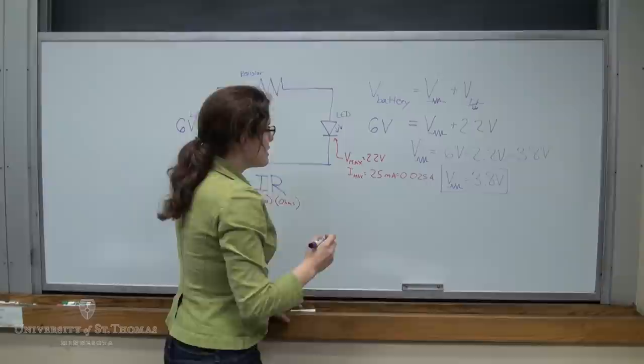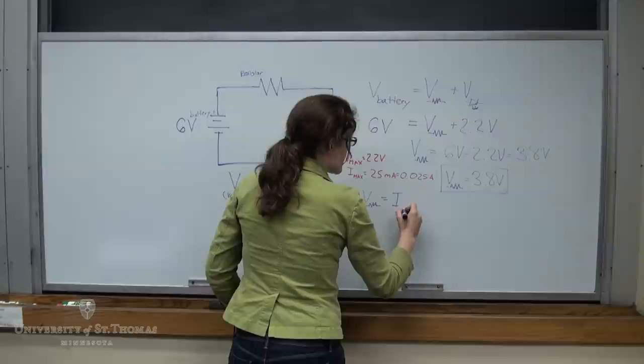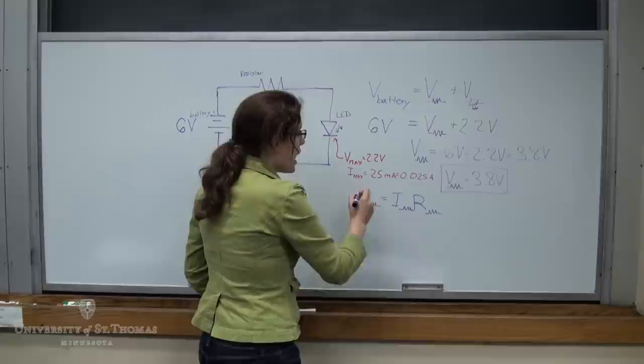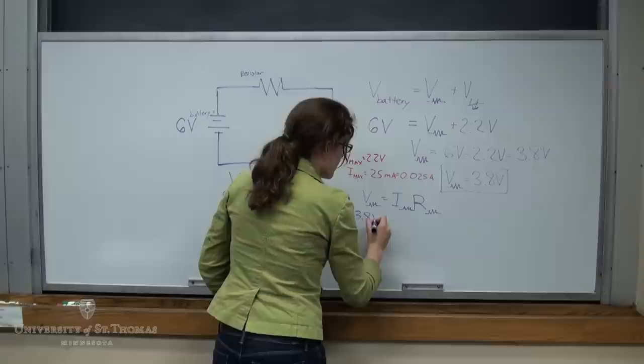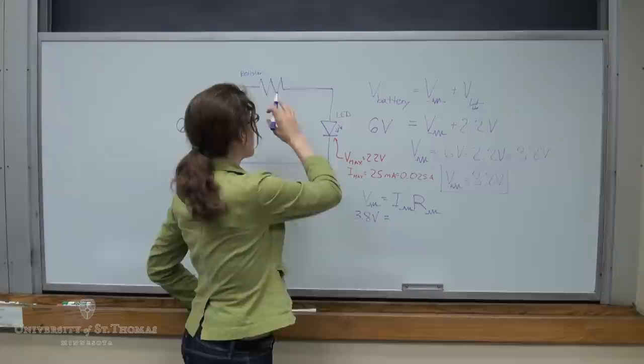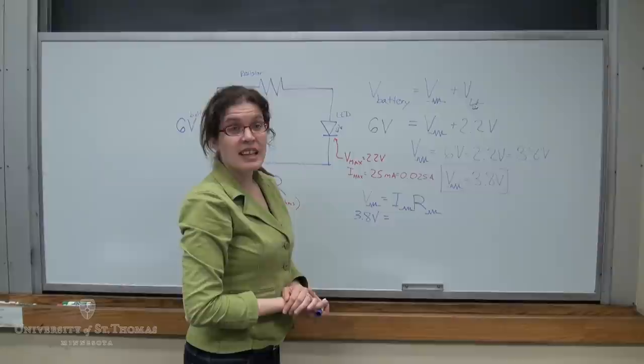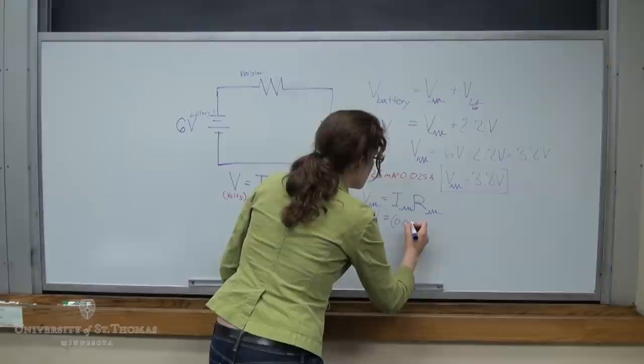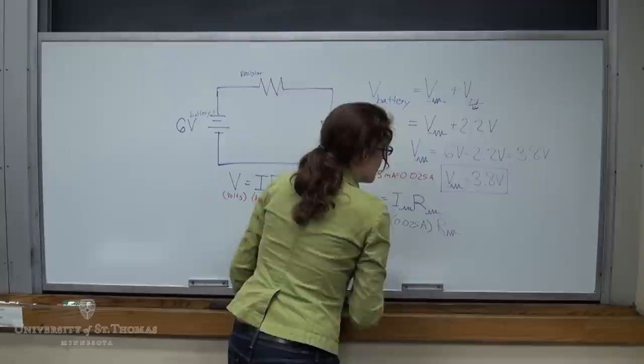Well now we can use Ohm's Law just across our resistor and say that the voltage across the resistor is equal to the current across the resistor times the resistance of the resistor. We've solved for V, right, we know it's 3.8 volts, and we're trying to find R, but we also need to know I. Now, unlike the voltage, the current through a circuit is the same throughout the circuit. So if we can measure the current across the LED, that's the same as the current across the resistor. And conveniently, we were already told what our maximum current is for our LED, so we'll use that to calculate what our resistor needs to be. So we can now plug in 0.025 amps. We still don't know what that needs to be, but that's okay, that's what we're solving for.